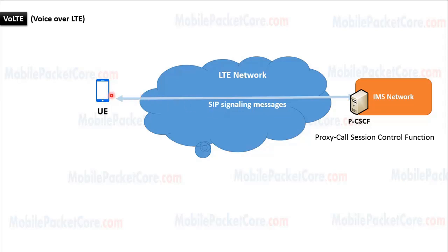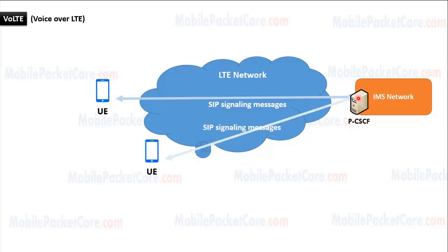The UE will exchange signaling messages with the IMS network in order to make a voice call to another UE. And the IMS network will exchange signaling messages with this other UE in order to receive this voice call. In turn, both parties will be able to communicate with each other.